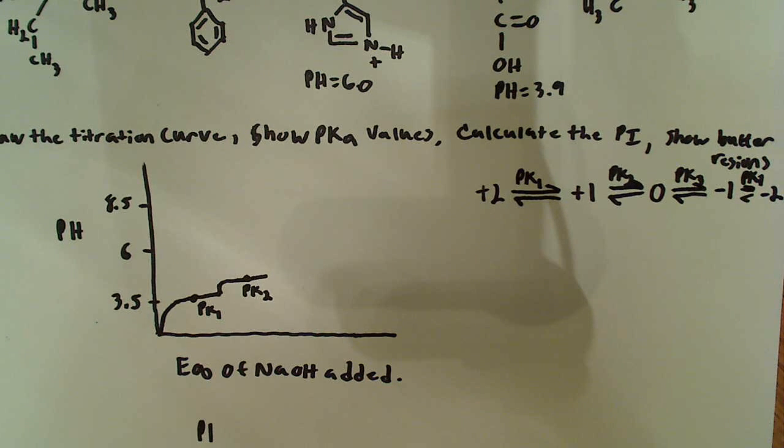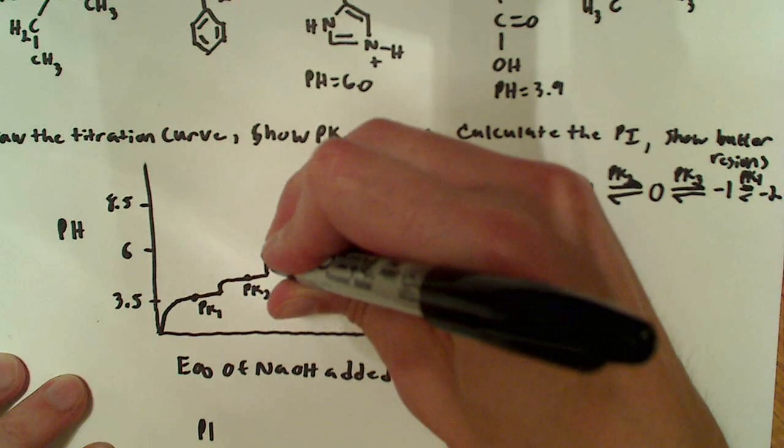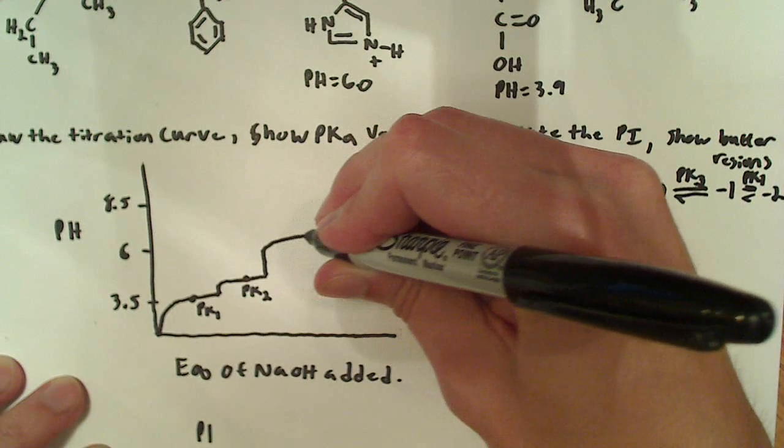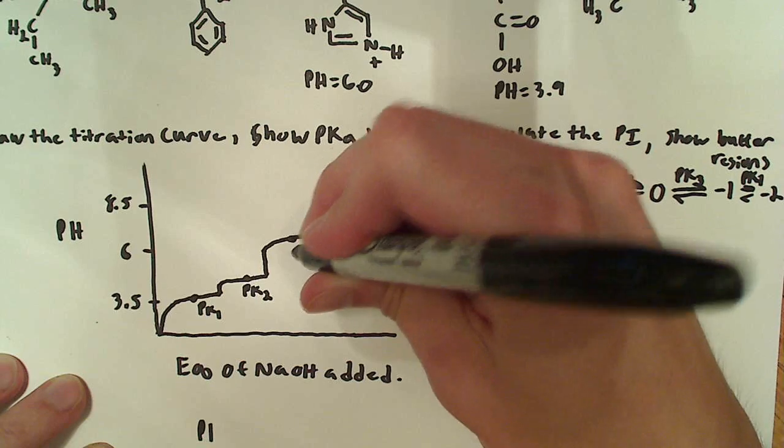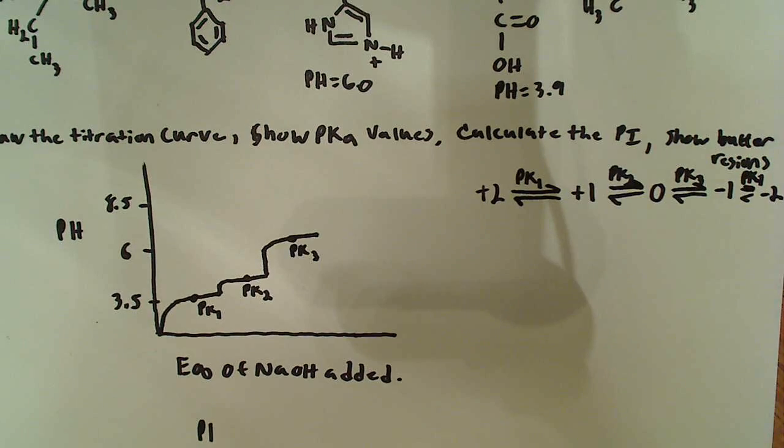And the next group to lose its proton is going to be the histidine, and that's at 6. So this is going to jump up like this, and it's going to flatten out around 6 like that. And that's pK3.